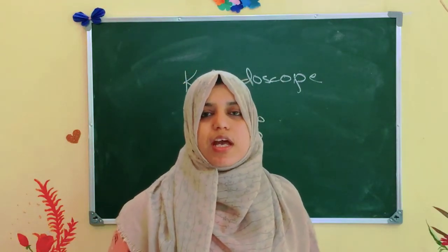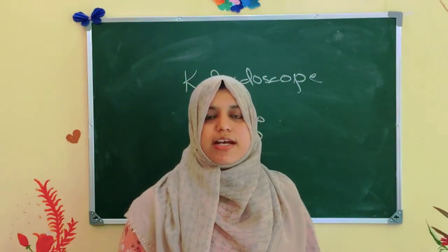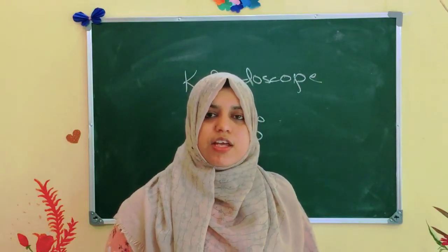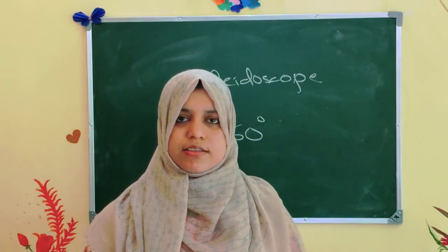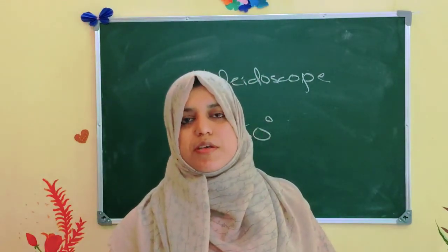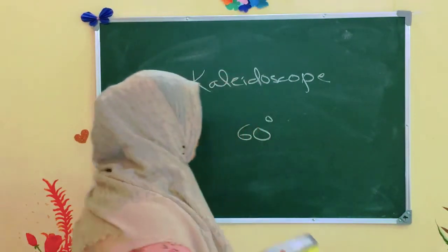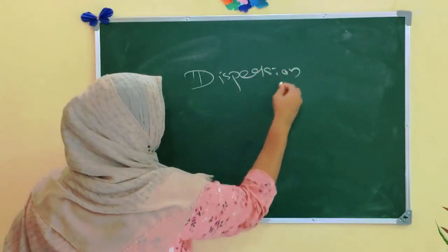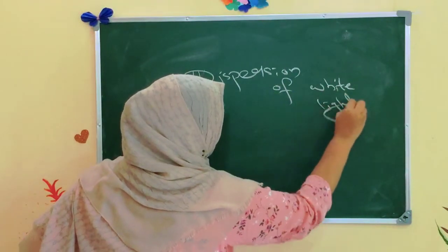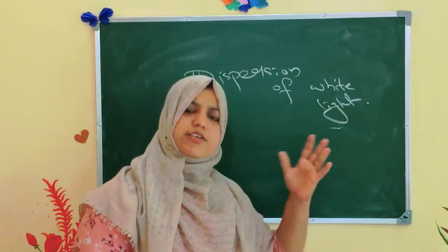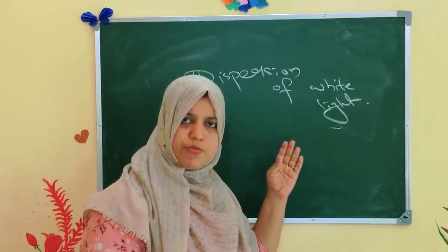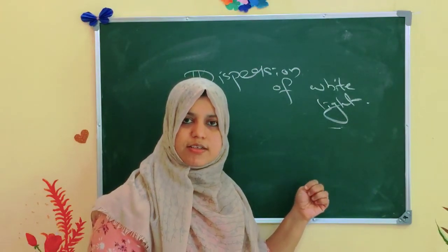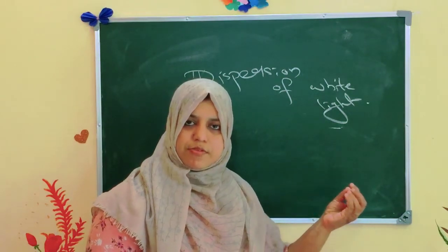If you want to make a kaleidoscope, you can refer to page number 204 in your science textbook. Next is about sunlight or white light. Sunlight or white light consists of 7 colors — this information we already studied from 7th standard. Sir Isaac Newton concluded this by giving an experiment, that is the dispersion of white light. The splitting up of white light into 7 colors is known as dispersion of light.